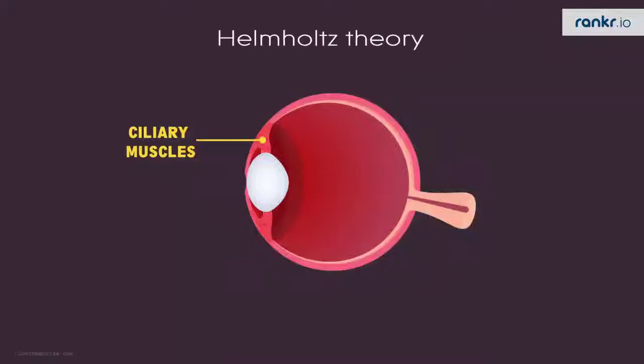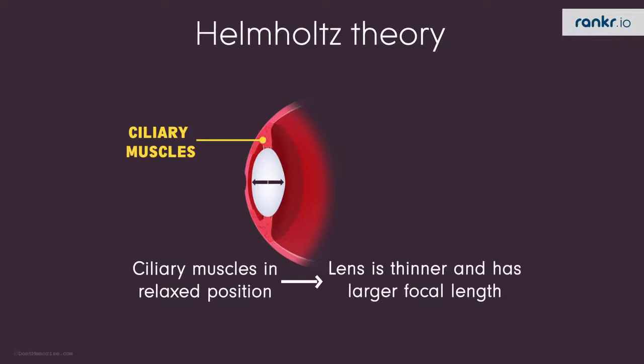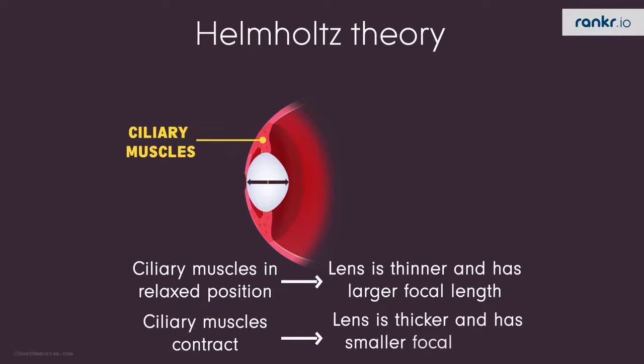One of the most widely accepted theories says that when the ciliary muscles are in a relaxed position, the lens is thinner, and hence it has a larger focal length. And when these muscles contract, thickness increases and hence the focal length decreases.